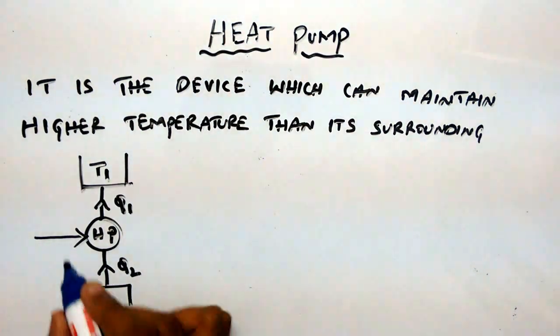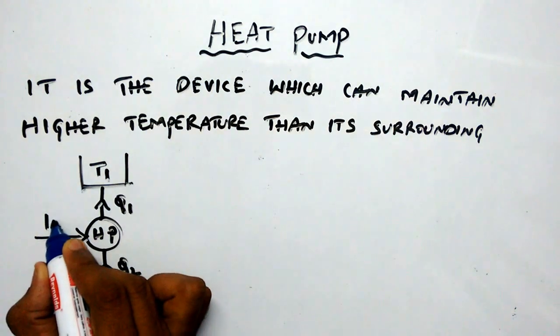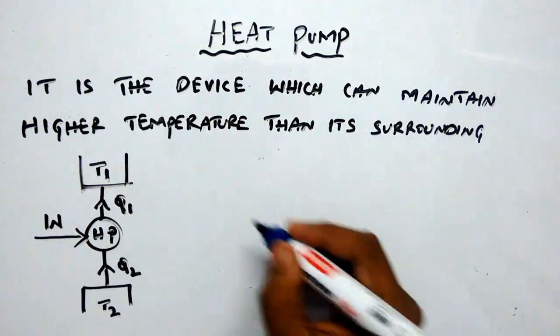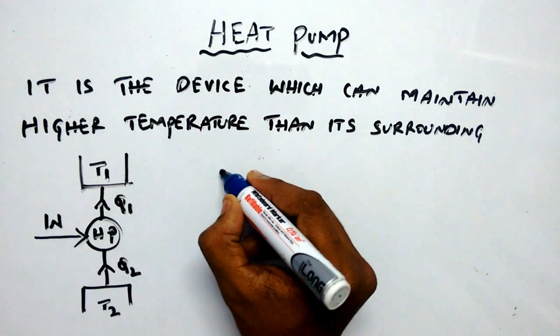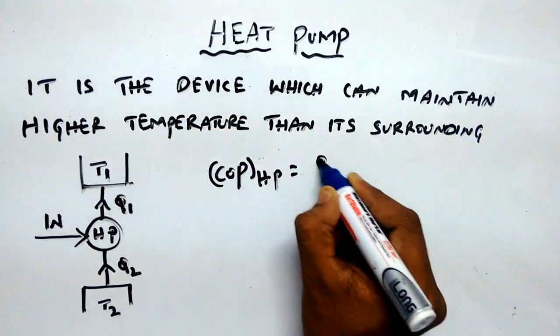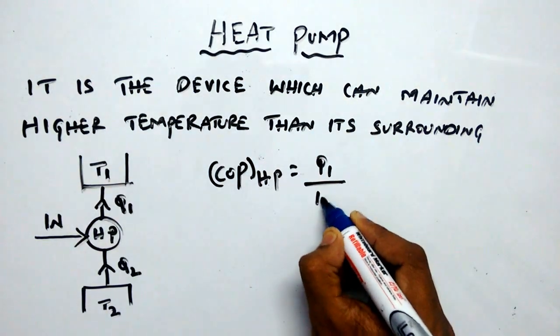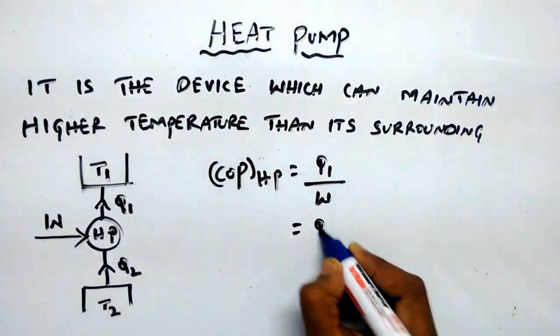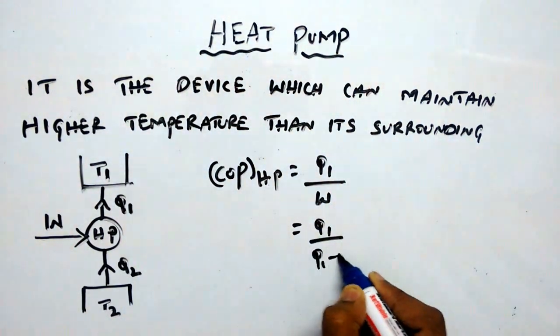Let us consider W to be the work input to the heat pump. The coefficient of performance of a heat pump is equal to heat supply divided by work input, so that is equal to Q1 divided by W, which equals Q1 divided by (Q1 - Q2).